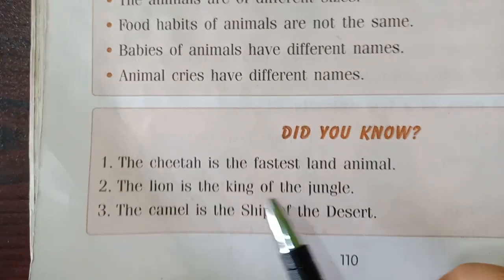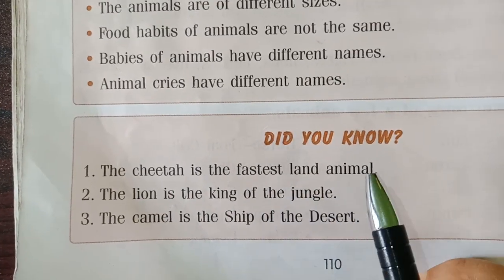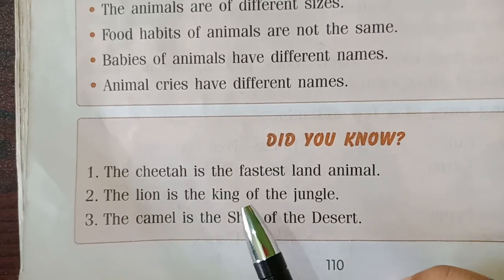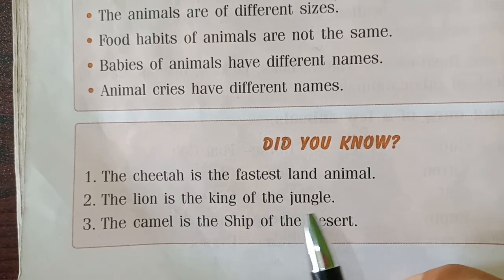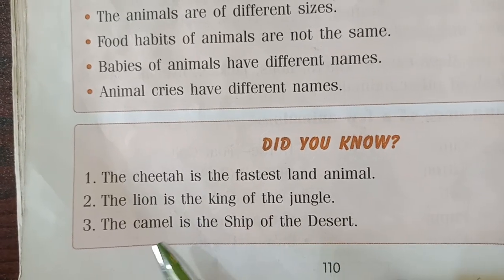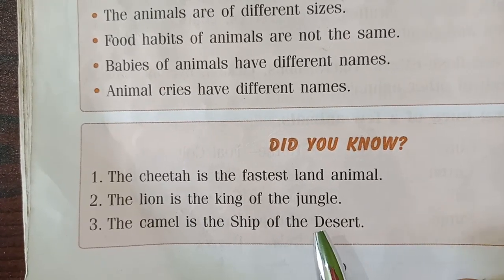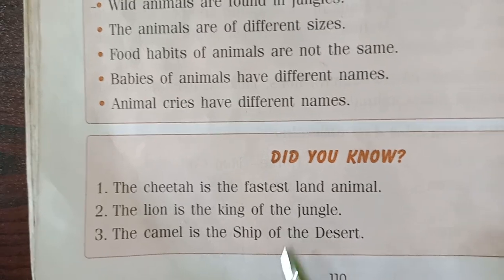Did you know? The cheetah is the fastest land animal. The lion is the king of the jungle. The camel is the ship of the desert.